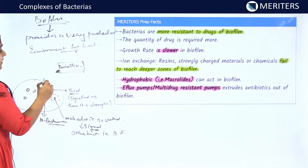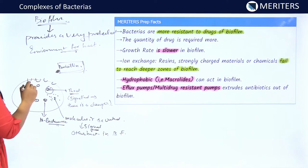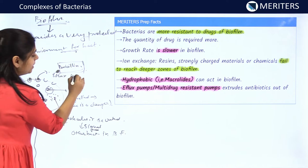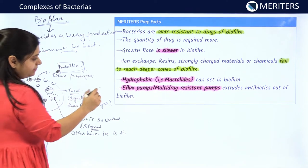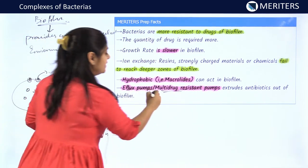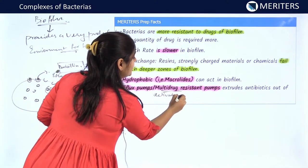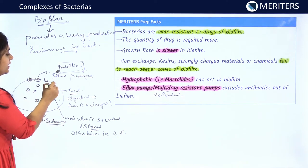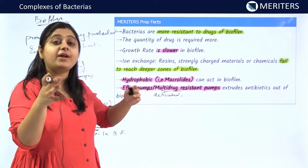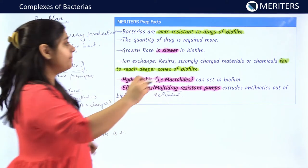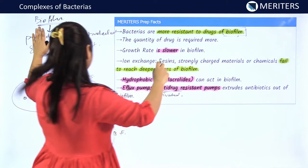Apart from this, there will be activation of certain efflux pumps, which are normally blocked by certain receptors. These efflux pumps, also called multi-drug resistant pumps, will be activated and will secrete the antibiotic outside the biofilm — they will not allow the antibiotic to enter. This is the mechanism by which the biofilm tries to protect the bacteria inside it. Bacteria are more resistant to drugs in biofilm and require more antibiotics to be reduced.